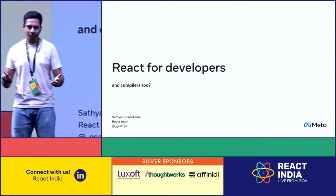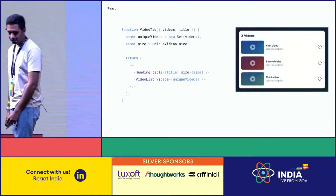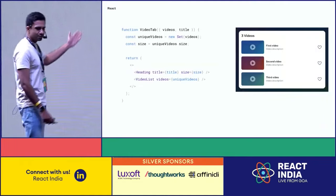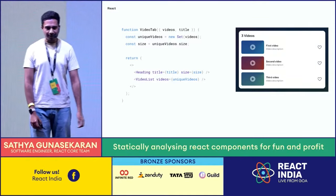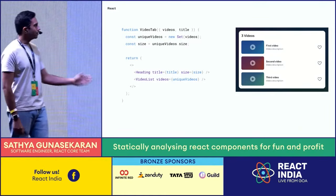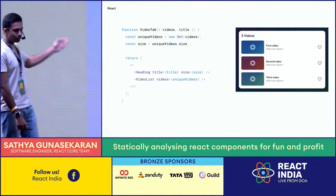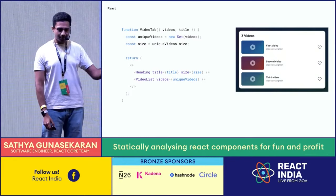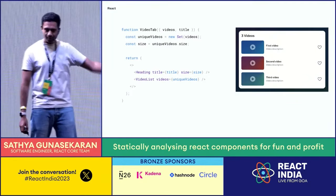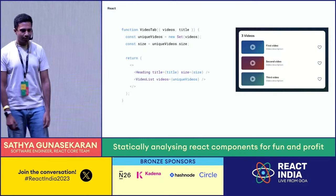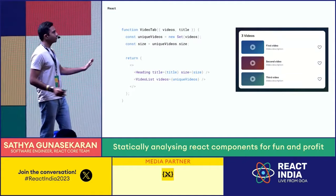But let's chat about why a compiler is even on the table. Picture this component — it gets two props, a list of videos and a title, and spits out a couple of components: a heading and a video list. In the code, we're removing duplicates from the video list with a set, tossing that down to video list as a prop, and the title and the number of videos to the heading. It's pretty straightforward React code.